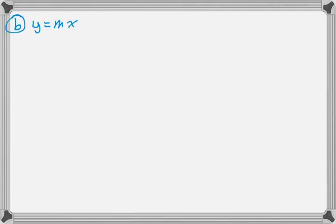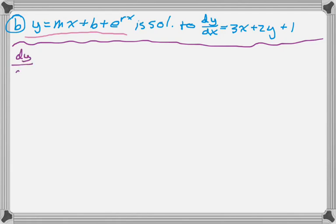The next question, I actually like the next question. They give you that y equals mx plus b plus e to the rx is a solution of the differential equation, and what we have to do is find m, b, and r. So the first thing I'm going to do is take the derivative of that y that I'm given.